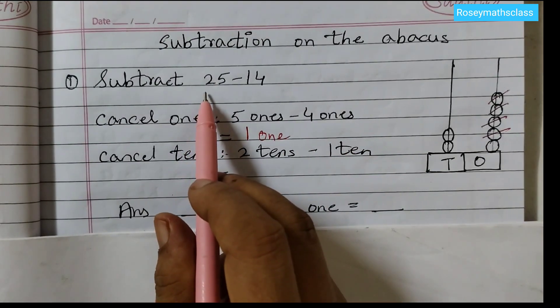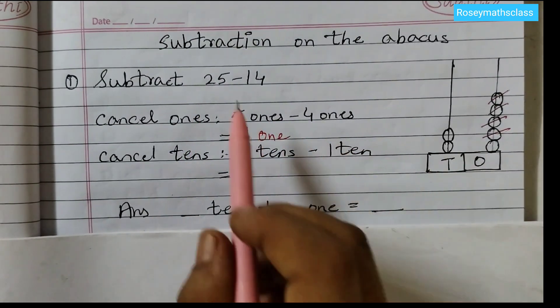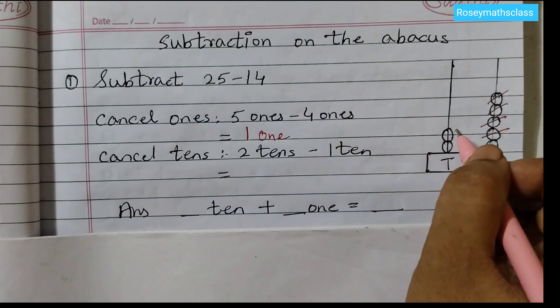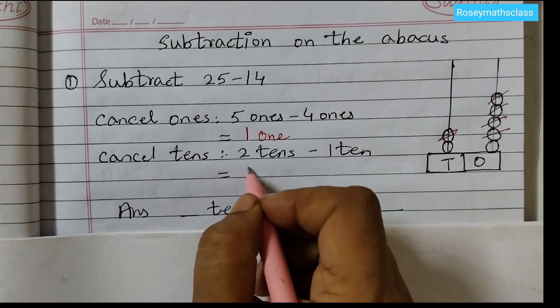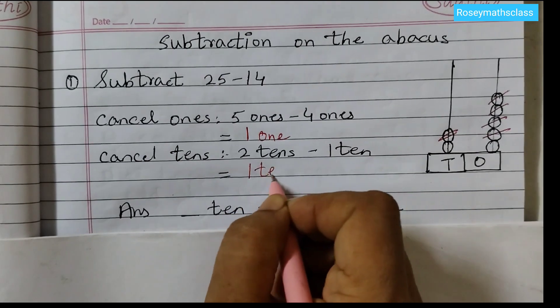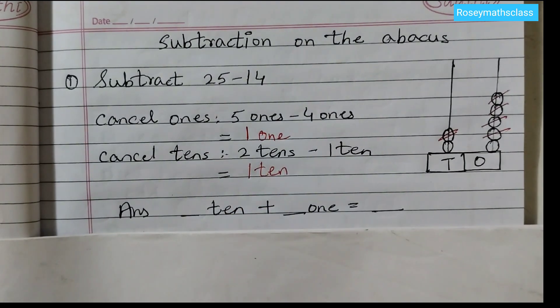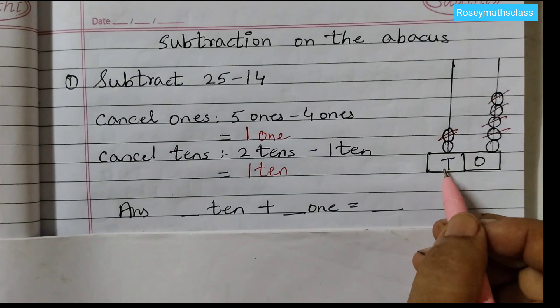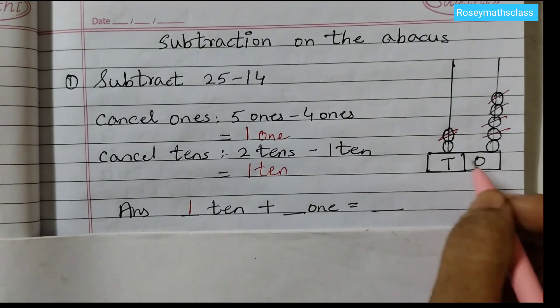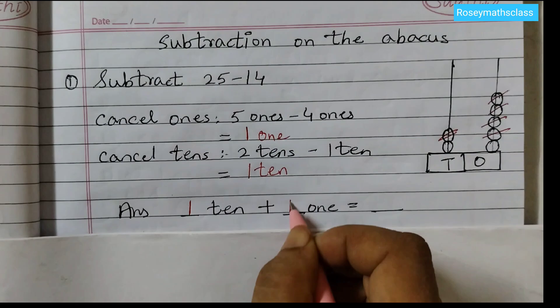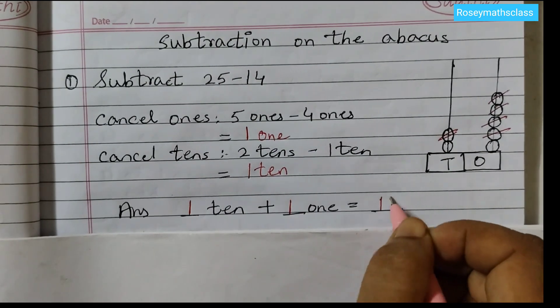Now cancel 10's, 2 beads are there and we need to cancel out 1 bead. So 2 tens minus 1 ten is equal to 1 ten. Now for the answer we will see how many beads are left. In 10's place we have just 1. So 1 ten plus 1. So the answer is 11.